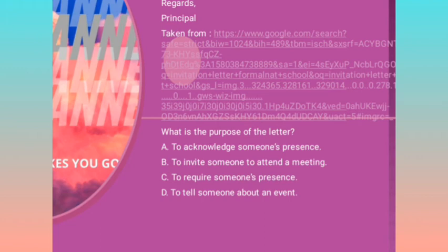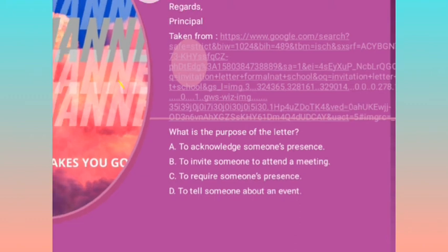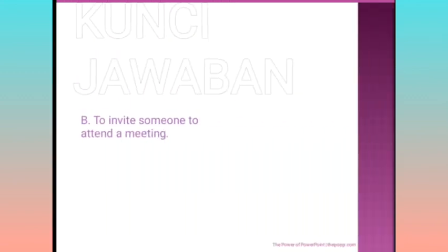A tentu saja tidak masuk. C: 'to require someone's presence' — sedikit masuk, tapi di sini tidak disebutkan hadir di mana spesifiknya. Kalau sudah ada B yang lebih tepat, kenapa pilih C? B sudah menyebutkan mengundang untuk menghadiri meeting — lebih spesifik. D: 'to tell someone about an event' — memberitahu ada acara; padahal selain memberitahu dia juga mengundang, dan intinya adalah mengundang, bukan memberitahu. So the answer is B: to invite someone to attend a meeting.